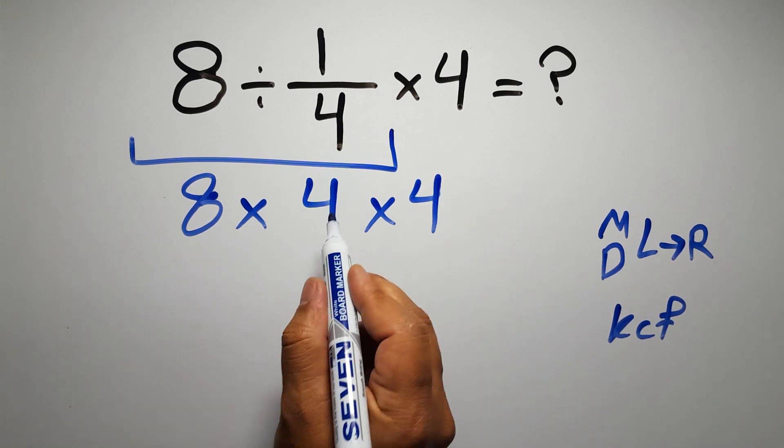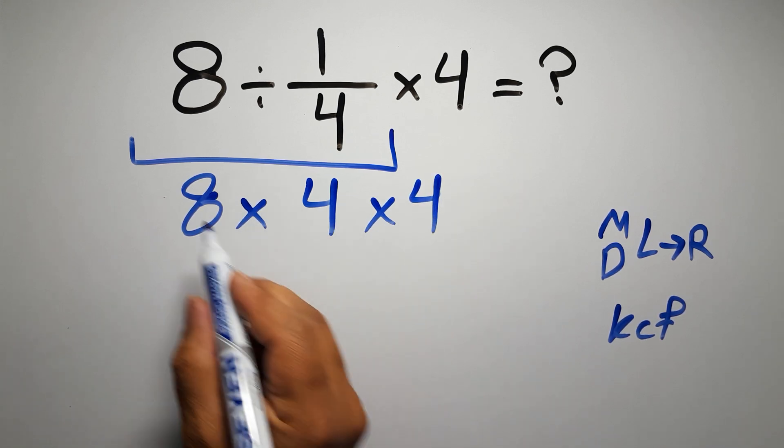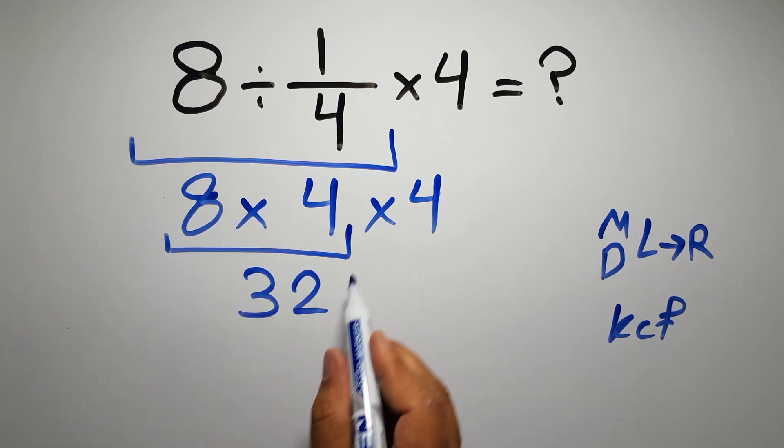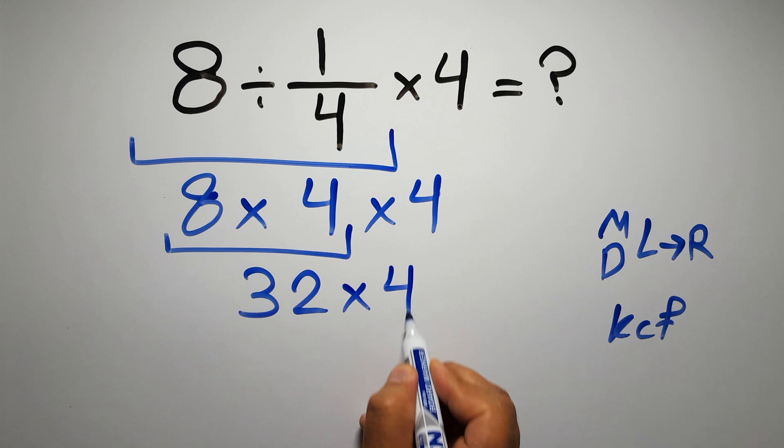So 8 times 4 times 4. 8 times 4 gives us 32, and 32 times 4 equals...